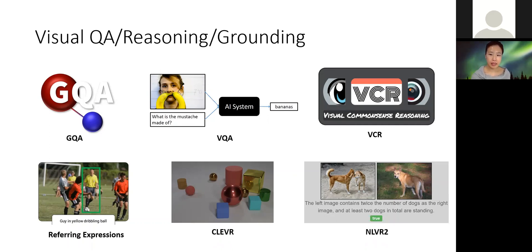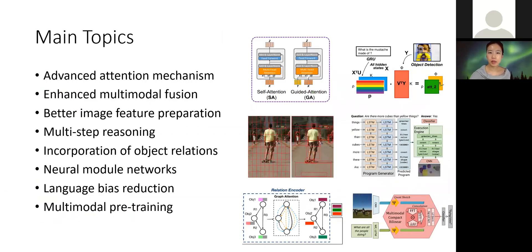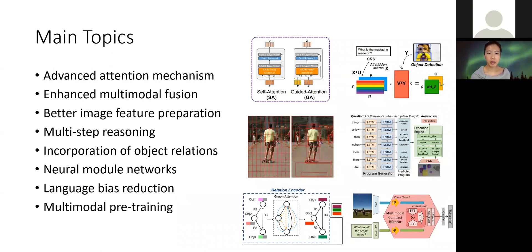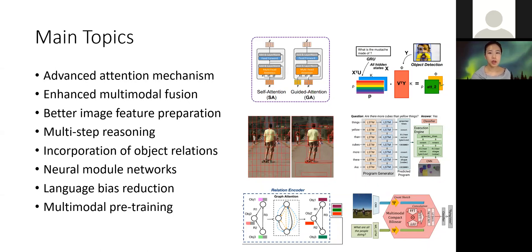Popular tasks include VQA, GQA, visual common sense reasoning, referring expression, and so on. In this session we will give a comprehensive overview of the main research topics in these areas, including advanced attention mechanisms for multi-modal fusion, better image feature representation, multi-step reasoning, neural module networks, and more. We'll hear many interesting topics from Joe in this session.